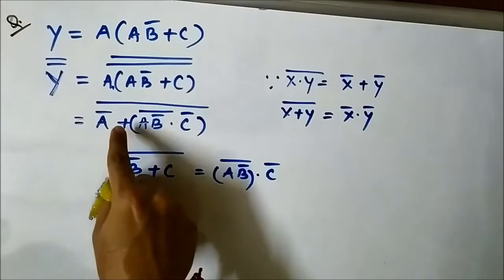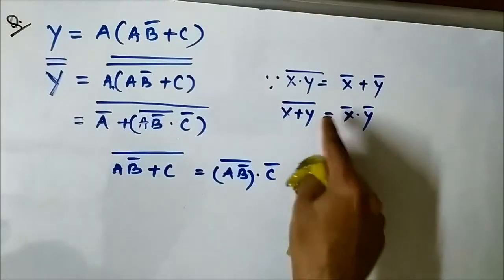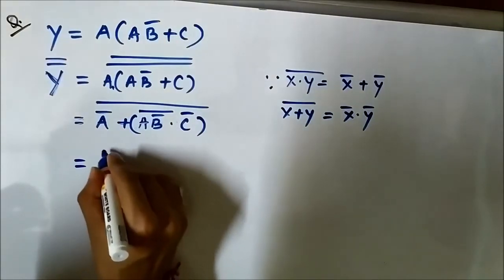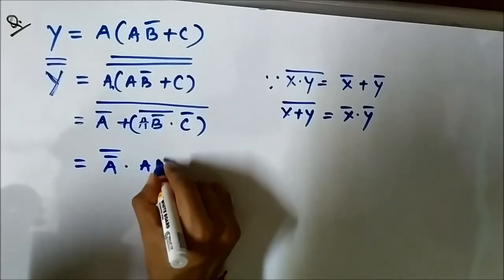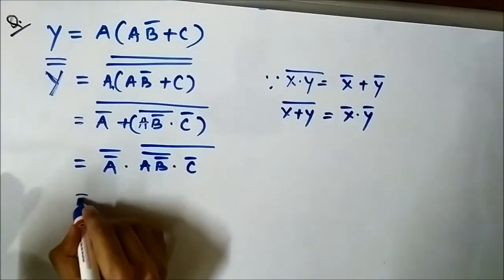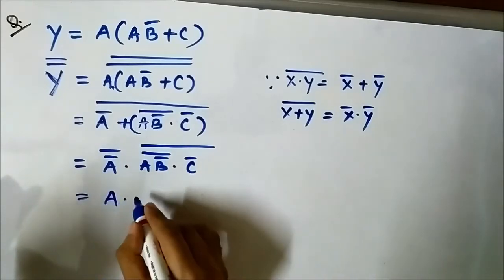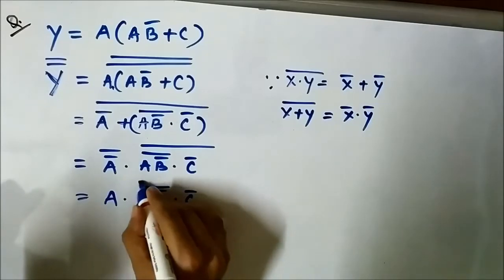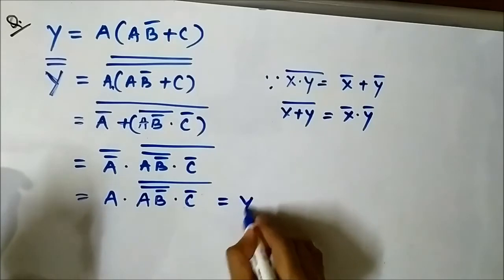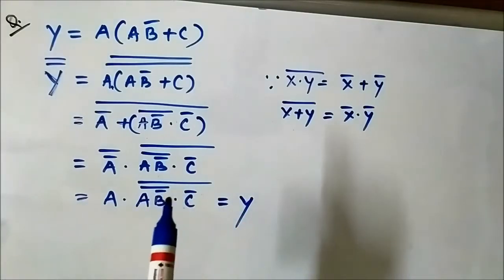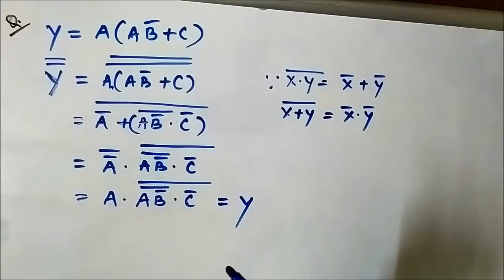Again we can convert this remaining OR symbol into AND using the same law, giving us A complement complement AND AB complement whole complement, C complement complement. We know that the double complement of something gives us the same value. So this becomes simply A AND AB complement whole complement AND C complement complement. This is the modified Boolean expression — all variables are now in product form, in AND form. We can now easily implement this using NAND gates.